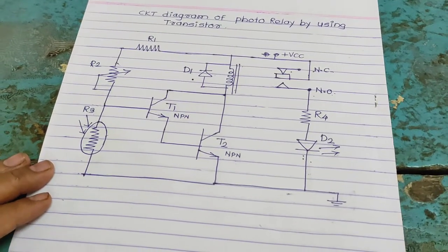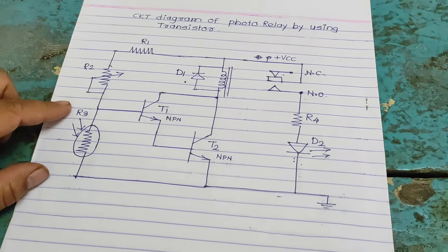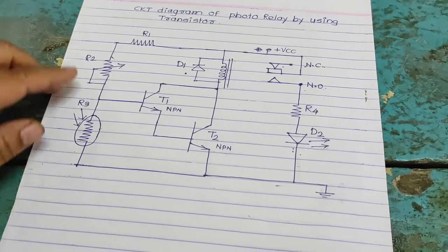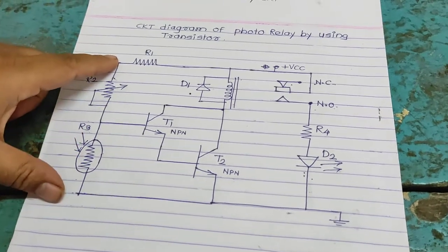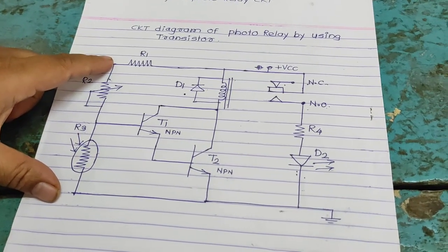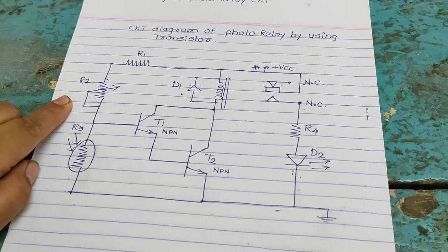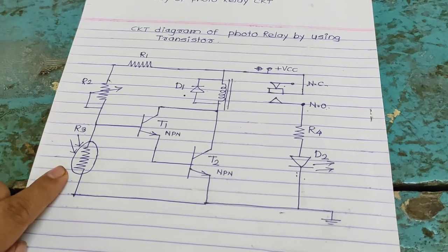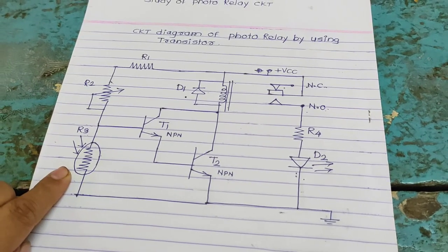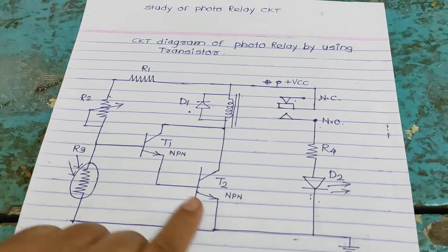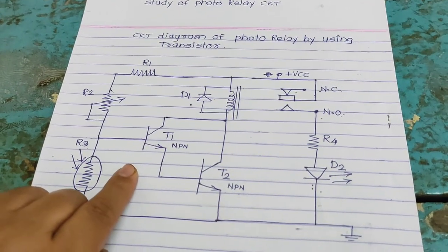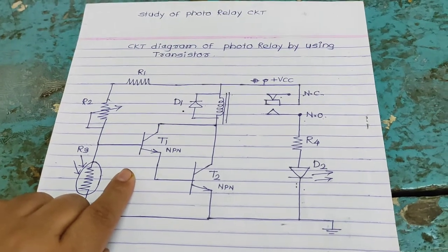Circuit diagram of photorelay by using transistor. Here circuit diagram, resistor R2 and R3 is connected in voltage divider arrangement. R2 is the variable resistor. R3 is the LDR light dependent resistor. Transistor T1 and T2 is connected in Darlington pair. Both transistors have NPN type.